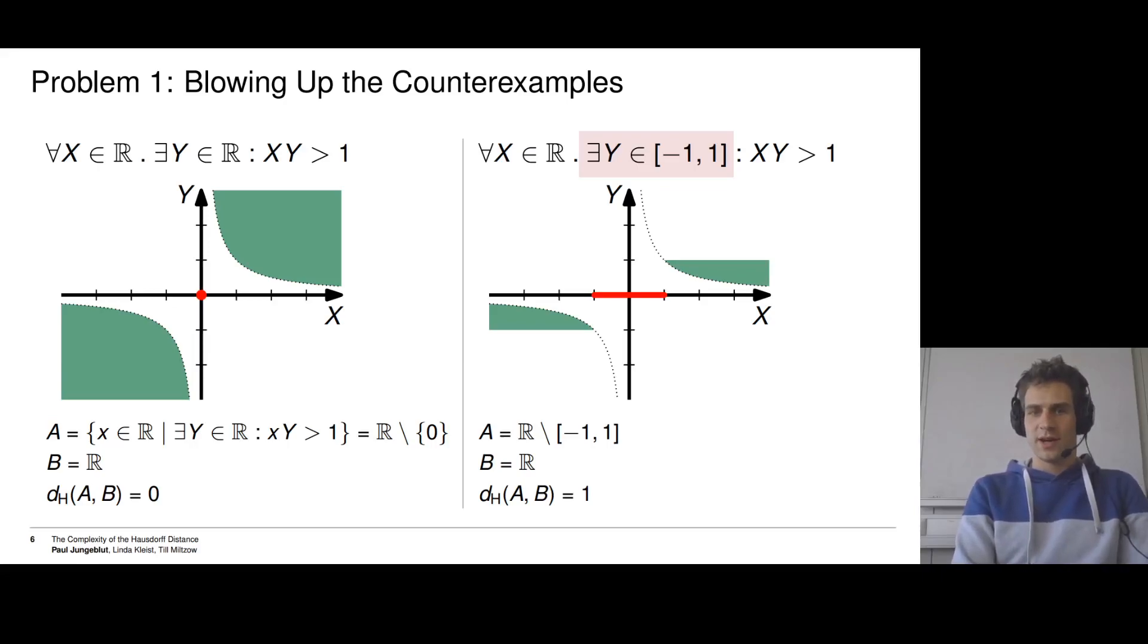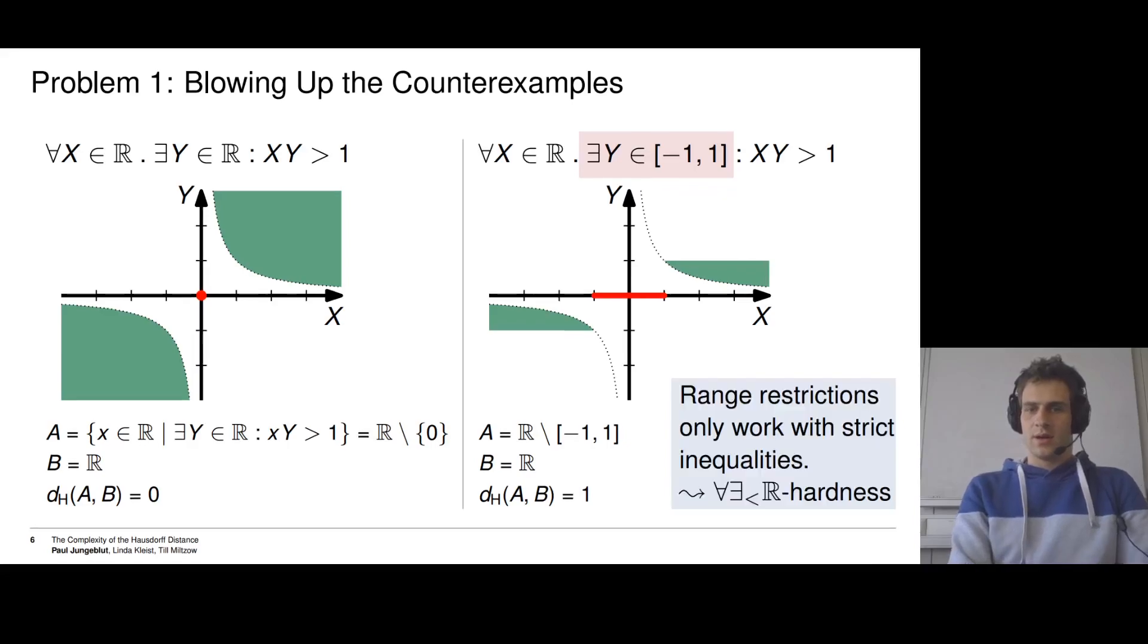Of course, we cannot throw in arbitrary range restrictions. We have to be really careful not to make a true formula false or false formula true while doing this. And this only works for formulas containing only strict inequalities. We solve this for all dimensions in the full paper, and this is why we only show strict ∀∃ℝ hardness, because we need these strict inequalities.